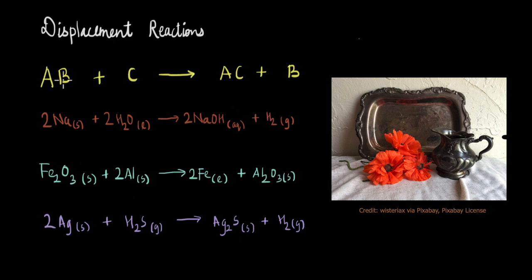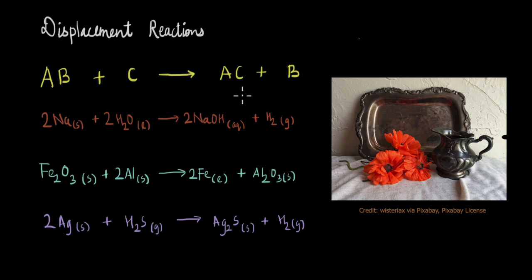Now if you see here, these reactions are also called single displacement reactions because there is only one displacement taking place. But displacement reactions can also be double displacement reactions, where two displacements take place. Let's see what they look like.